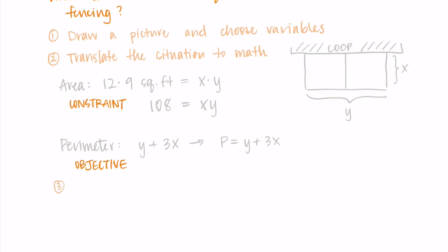For our third step, we substitute the constraint into the objective. Remember, our whole goal is to take the derivative of the objective equation. For us, that's the perimeter. We're going to take the derivative, find the critical point that corresponds to the minimum. So in order to take its derivative, we'd like to have only one variable going on.